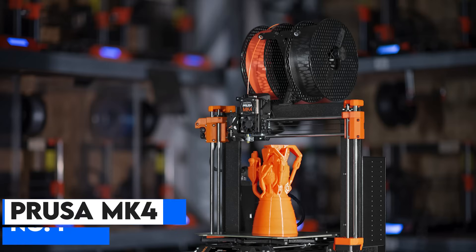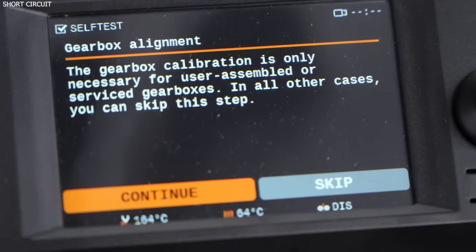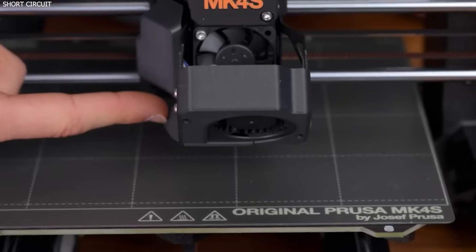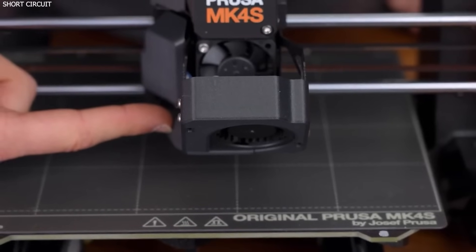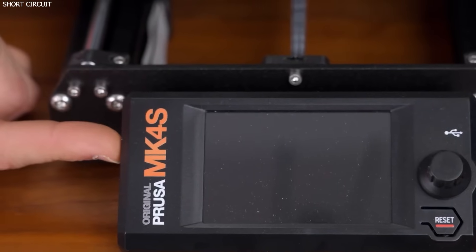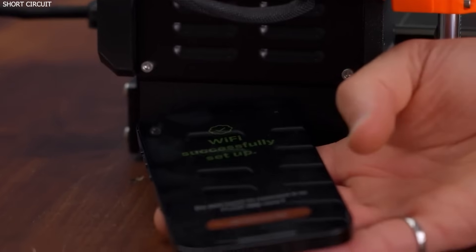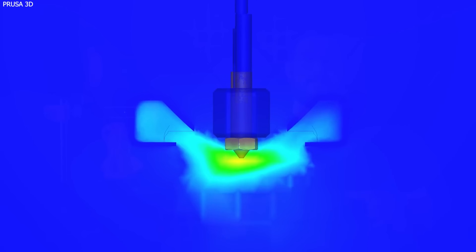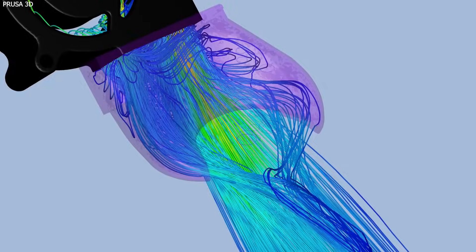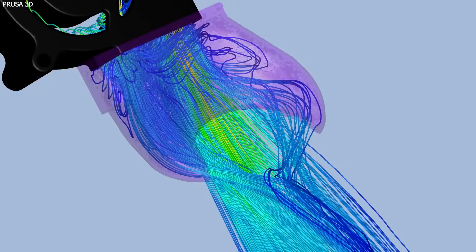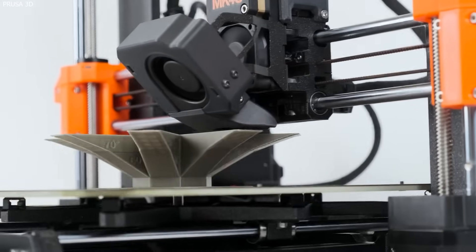Number 1: Prusa MK4 – Best for Reliability and Precision. Prusa has built a reputation for producing some of the most reliable and high-quality 3D printers on the market, and the Prusa MK4 continues this legacy. Designed as an upgrade to the highly popular MK3, the MK4 incorporates several new features to enhance both precision and ease of use.